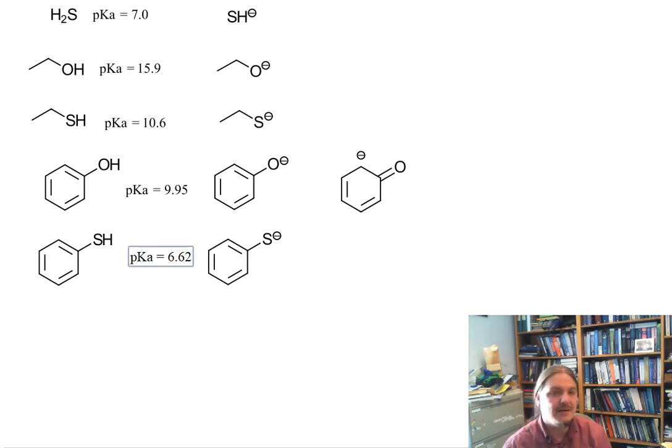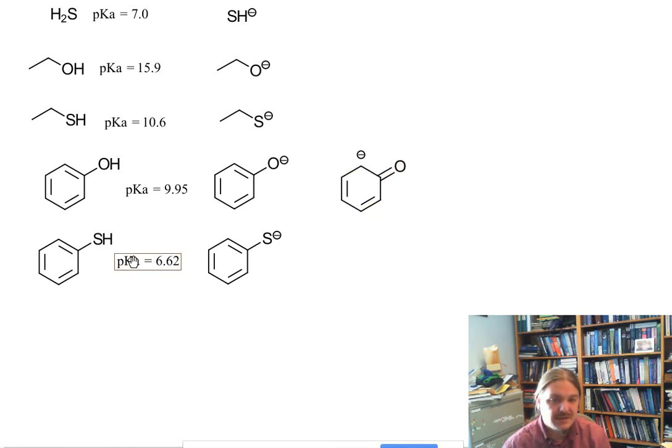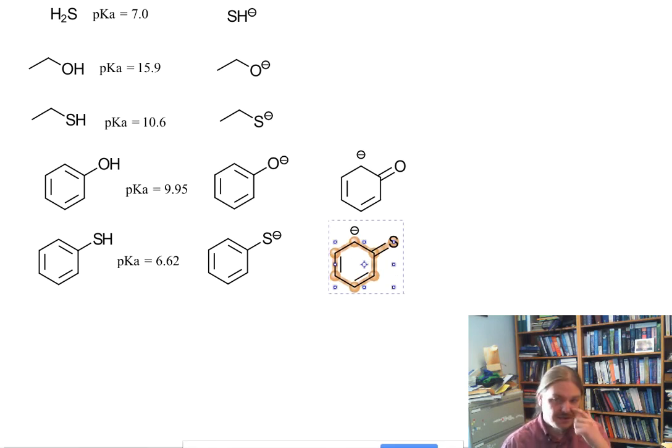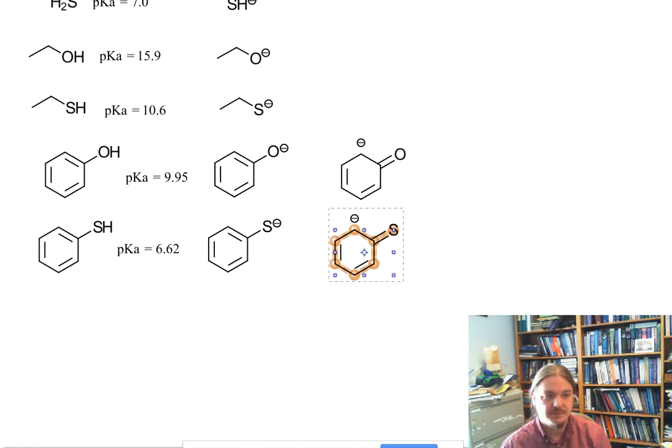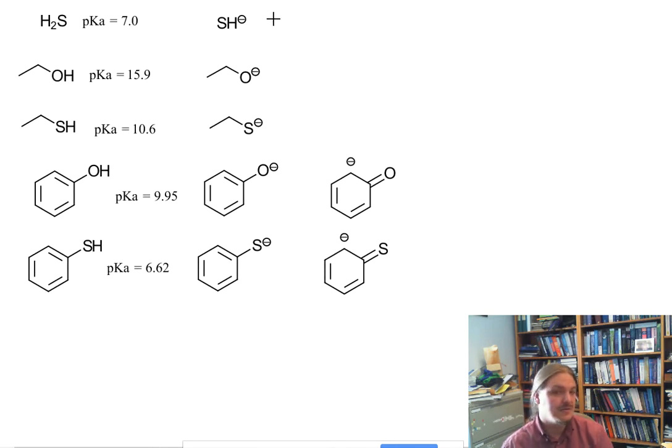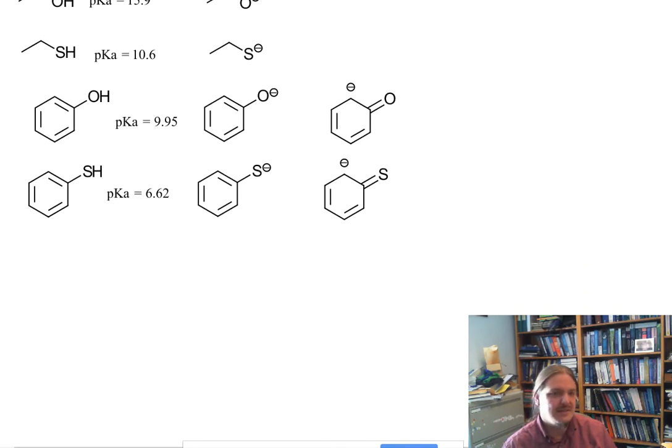Likewise, benzene thiol or thiophenol is also more acidic than other thiols because it has a similar resonance stabilization of the negative charge. You can see that in general, thiols are three to five pKa units more acidic than the corresponding alcohol because the sulfur is a larger atom that stabilizes the negative charge a little better.